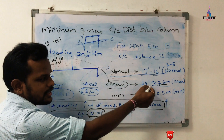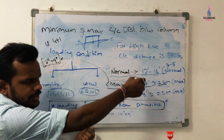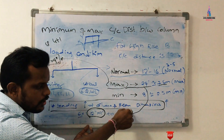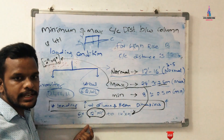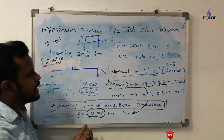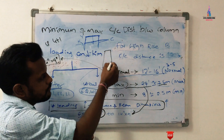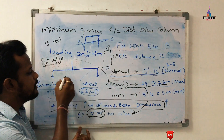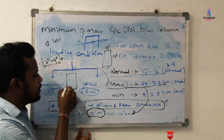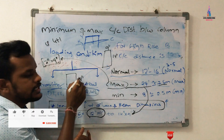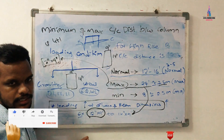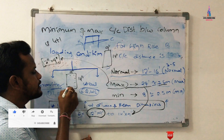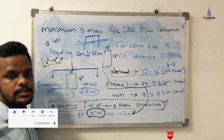If you want to increase the center-to-center distance between columns to between 20 feet and 24 feet, we use higher dimensions — for example, 14 inches by 9 inches, where 14 inches is the depth and 9 inches is the width of the beam. Similarly for the column section, 14 inches is the vertical dimension and 9 inches is the horizontal dimension. The reinforcement values depend on manufacturer specifications as explained in the previous video.